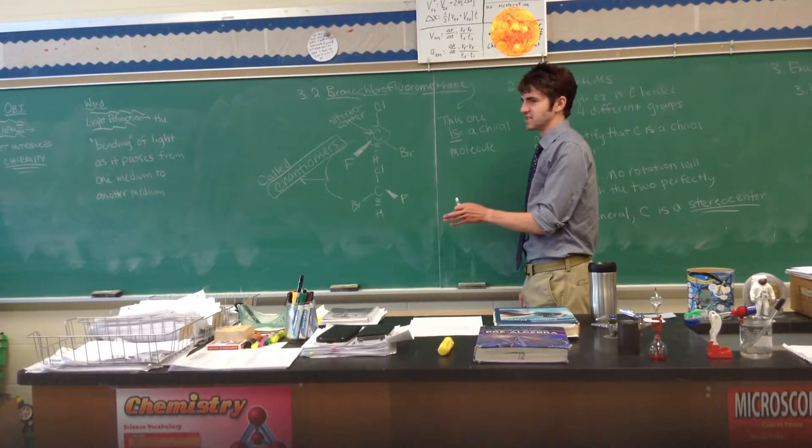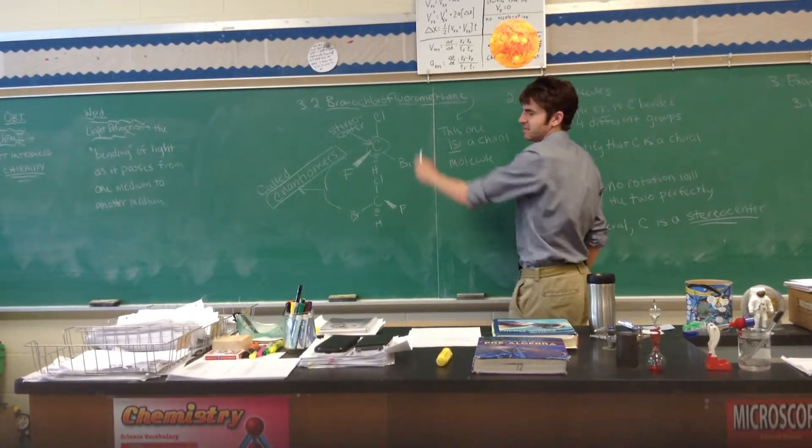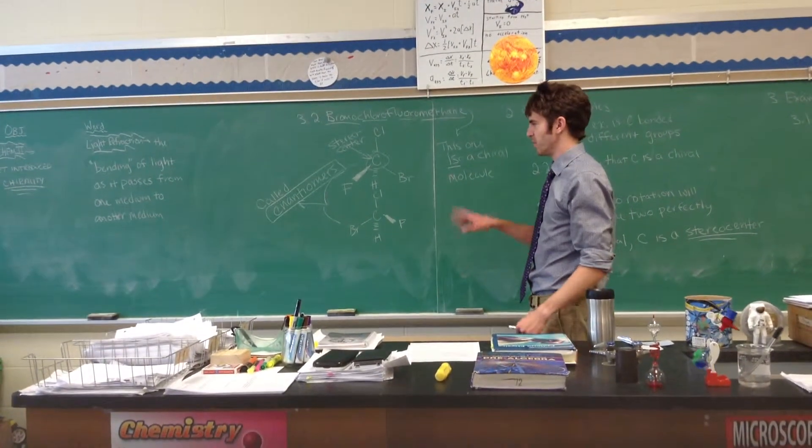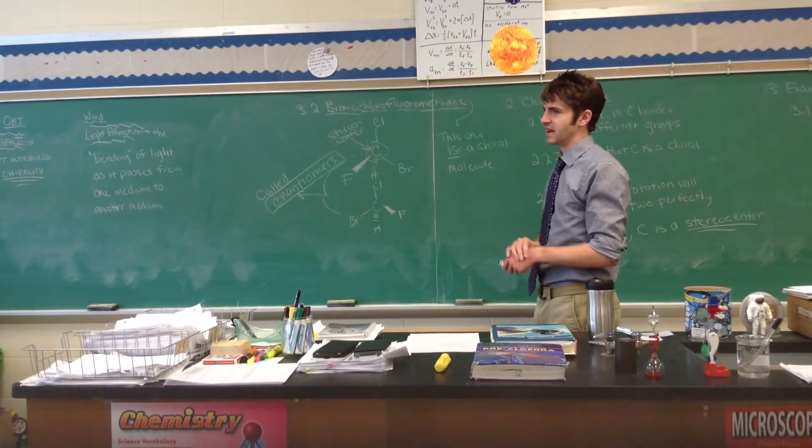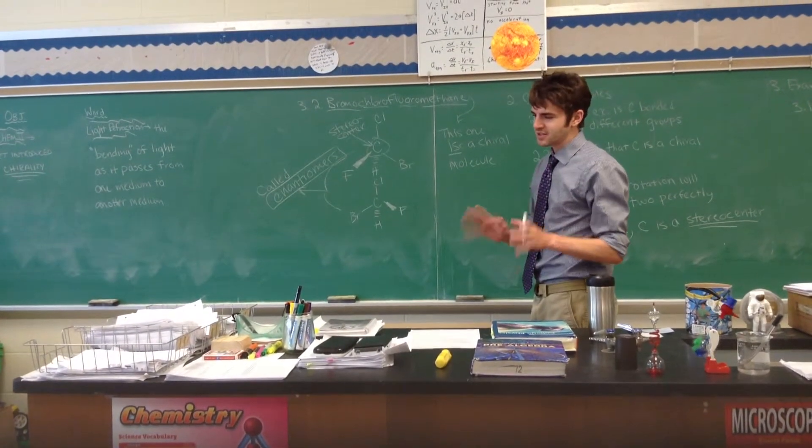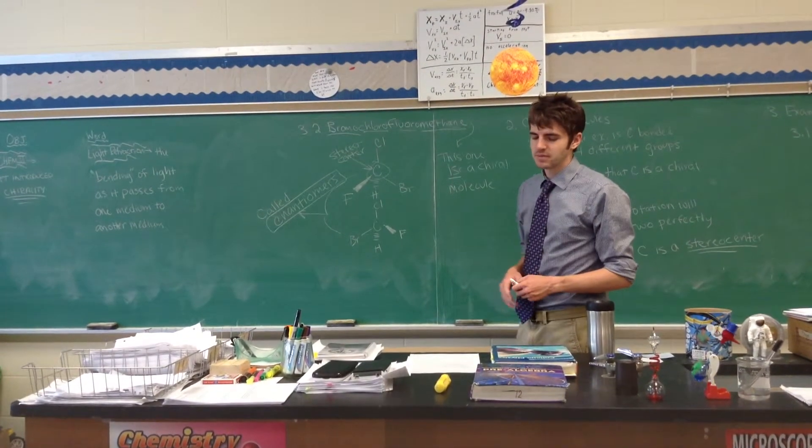Now, you might come across something that says, like, L-bromochlorofluoromethane, and it wants you to only draw the left-hand version of it. But we're not going to worry about which one is exactly the left and right. But you will sometimes see that they're specifically talking about one of the enantiomers versus the other. That's a good question.